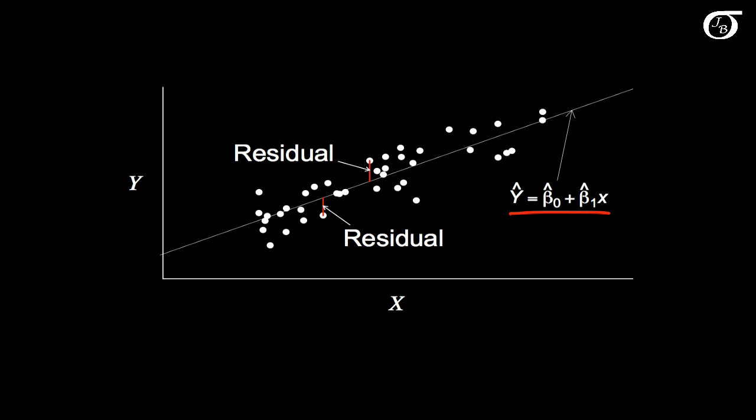The residuals are the signed vertical distances between the points and the line. Points below the line have negative residuals, and points above the line have positive residuals, but every point has a residual associated with it. This distance plus the sign, negative for below the line, positive for above.